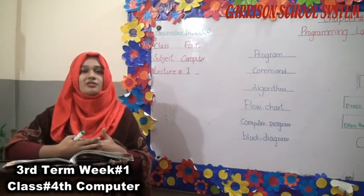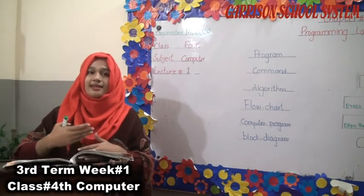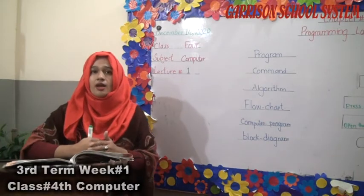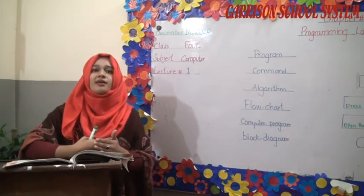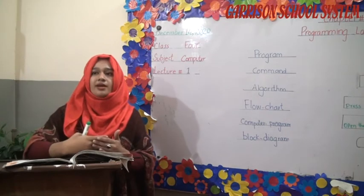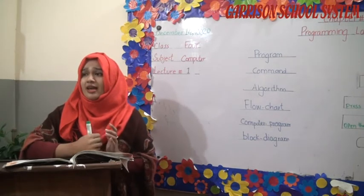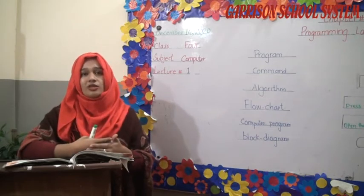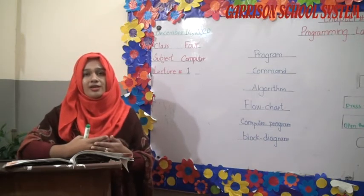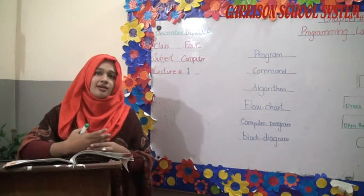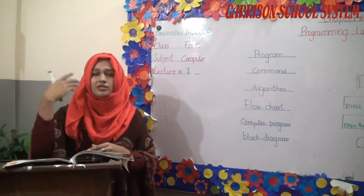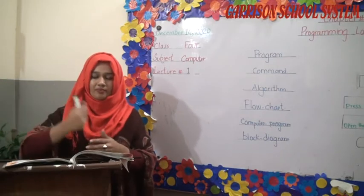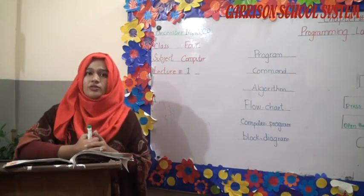Same way, hum computer ke andar bhi kuch instructions dete hain — that is called input. Anything given to the computer is called input. Work done by the computer is called processing. Anything the computer gives us is called output. And anything you store in your computer is called storage. Storage devices are of two types: primary and secondary.